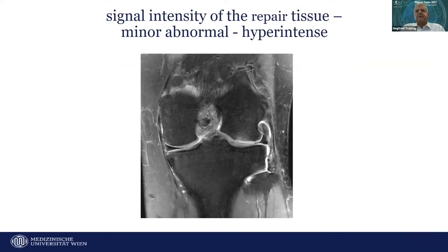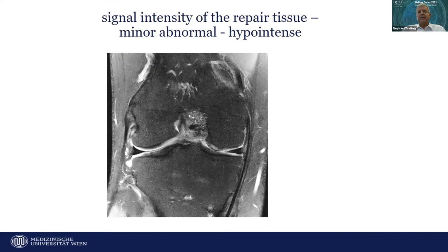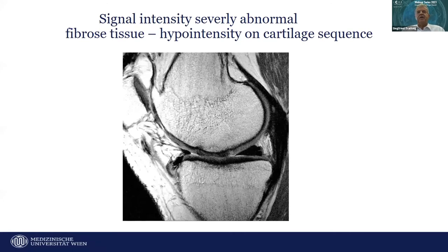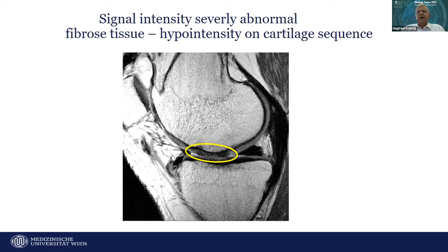Examples for signal intensity: a minor abnormal hyper-intense signal in repair tissue on a fast spin echo proton density fat-saturated image scores 10 points. Another example shows minor abnormal but hypo-intense repair tissue. Finally, a severely abnormal hypo-intense signal on a non-fat-suppressed proton density fast spin echo sequence — very dark, resembling fibrous tissue — scores zero.